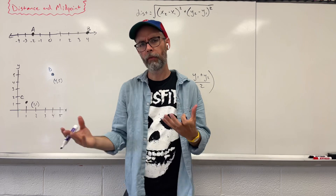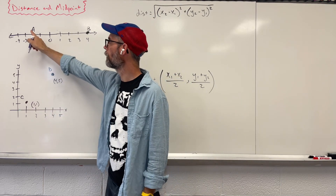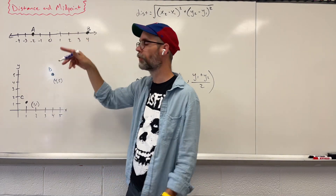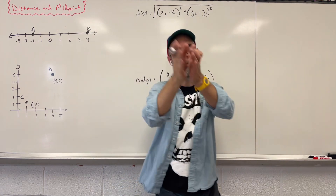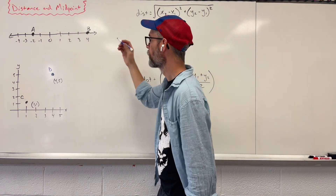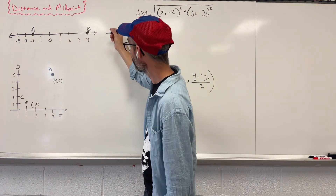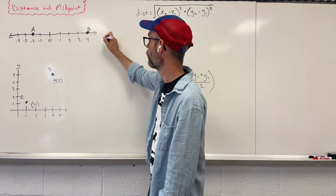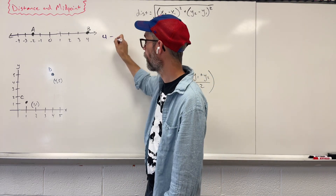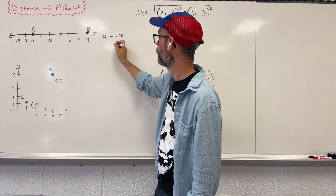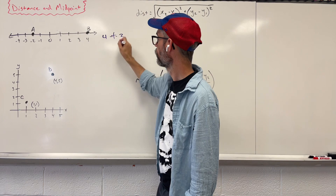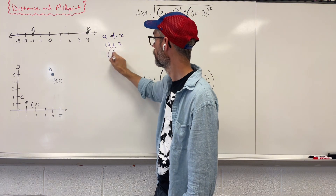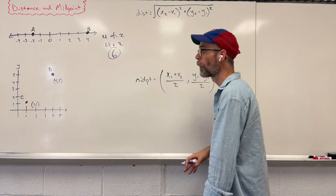So if I want to find the distance from A to B, I can literally just count: 1, 2, 3, 4, 5, 6 spots. We could also subtract the distances from each other, so I could say 4 minus negative 2. That turns to a plus, giving us 4 plus 2, which is, again, a distance of 6.